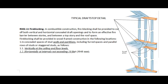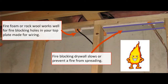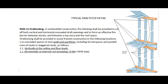R302.11 Fire Blocking. In combustible construction, fire blocking shall be provided to cut off both vertical and horizontal concealed draft openings, and to form an effective fire barrier between stories, and between a top story and the roof space. Fire blocking shall be provided in wood-framed construction in the following locations: 1. In concealed spaces of stud walls and partitions, including furred spaces, and parallel rows of studs or staggered studs as follows: 1.1 Vertically at the ceiling and floor levels. 1.2 Horizontally at intervals not exceeding 10 feet.